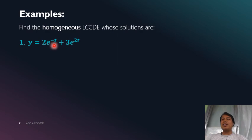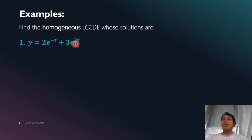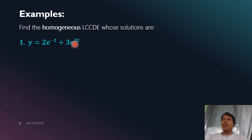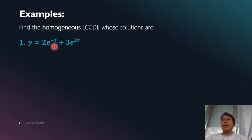Here's my first example: find the homogeneous LCCDE whose solutions are given. We have y = 2e^(-t) + 3e^(2t). Recall that in finding solutions of an LCCDE, the roots of the complementary function become the exponents of the exponentials. So here, the exponent negative 1 and the exponent positive 2 are the roots of the complementary function.